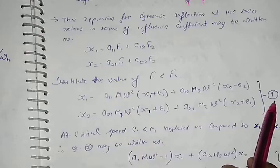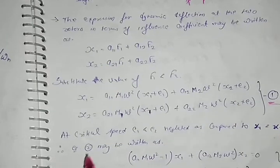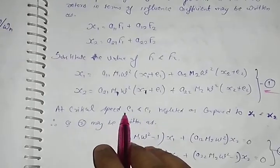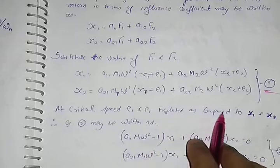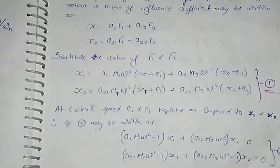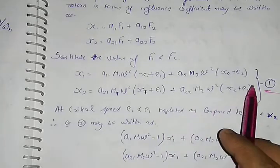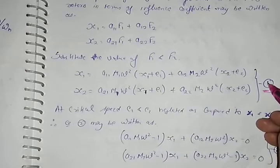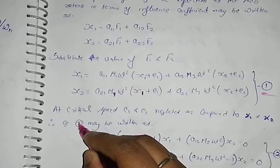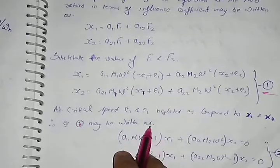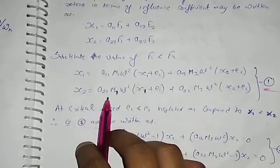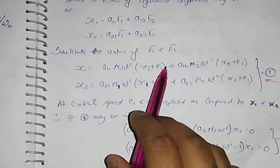Now at critical speed, E1 and E2 are neglected as compared to X1 and X2, because X1 and X2 are big as compared to E1 and E2. Therefore equation 1 may be also written as E1 terms zero.